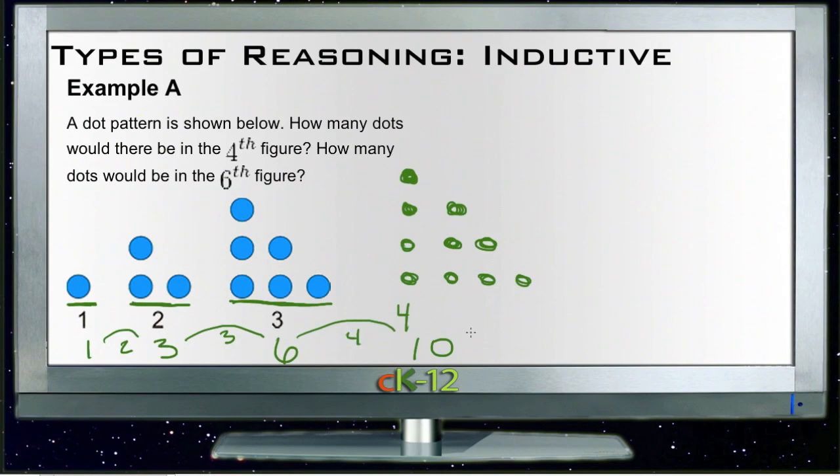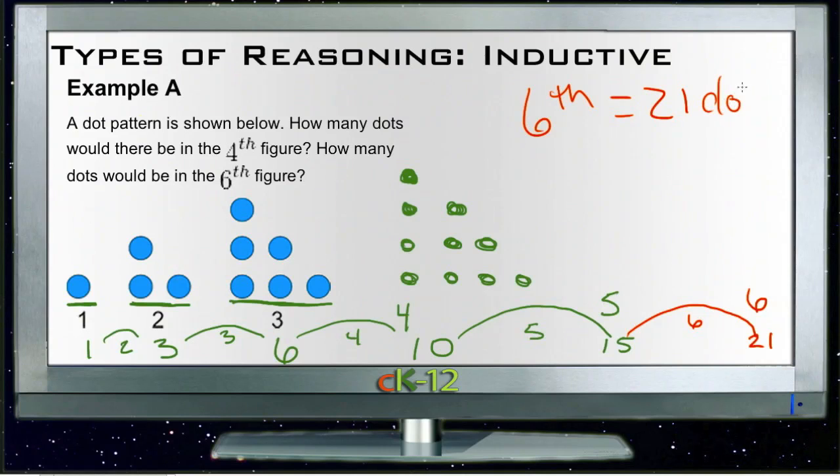That means the difference to the fifth figure would be 5, so it should have 15. Then the difference to the next figure should be 6, which would give us 21 for the sixth figure. So the sixth figure has 21 dots and the fourth figure had 10 dots.